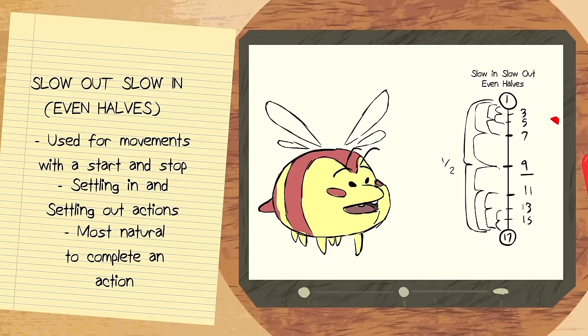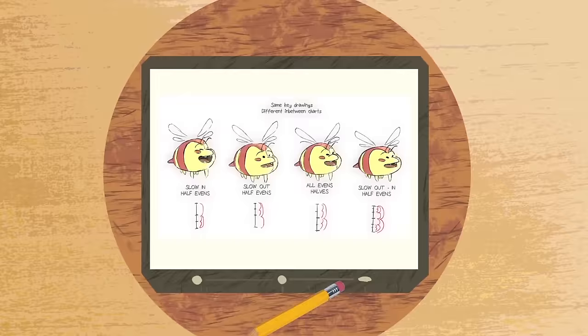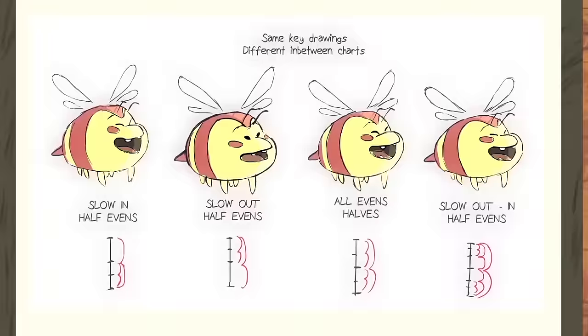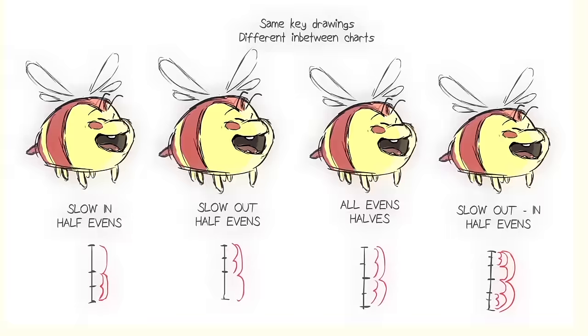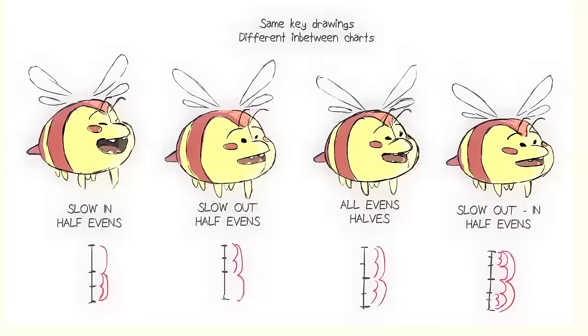Now, here marks the importance of using a timing chart. Same drawings, same keys, same breakdowns, most importantly, same length of running time. However, they all feel different from each other, because they all have different timing charts. The timing charts affected the way they are in between. It's because of this, they all give out a different effect from each other. What effect do you get out of each of them?